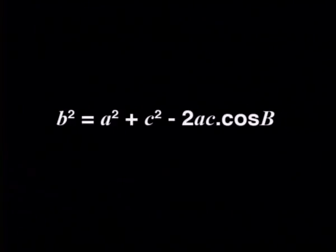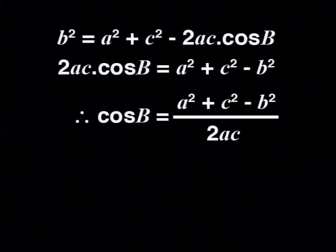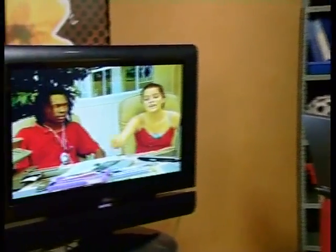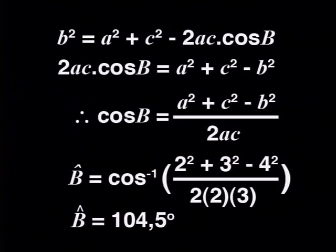And how did you calculate the size of angle B? The version of the cosine rule using angle B is: B squared equals A squared plus C squared minus 2 times A times C times cosine B. We made B the subject of the formula: 2AC cosine B equals A squared plus C squared minus B squared, so cosine B equals the right-hand side divided by 2AC. We used our calculator and got angle B — it was obtuse: 104.5 degrees, correct to one decimal place.